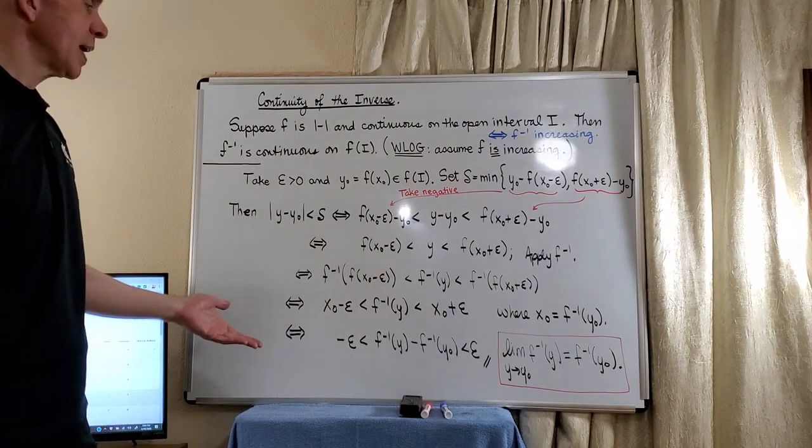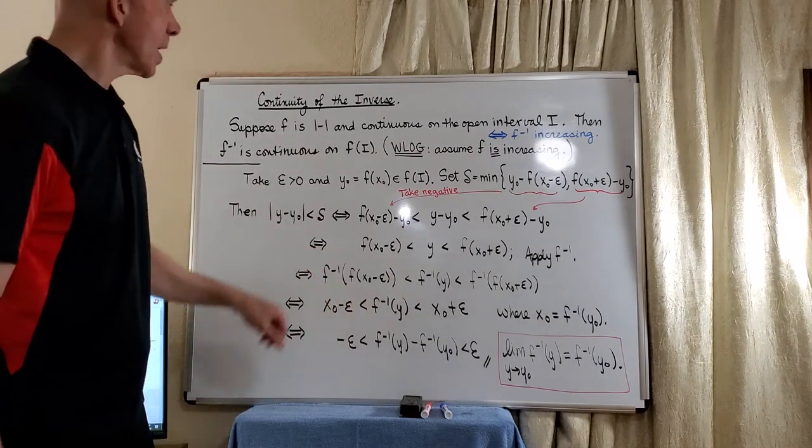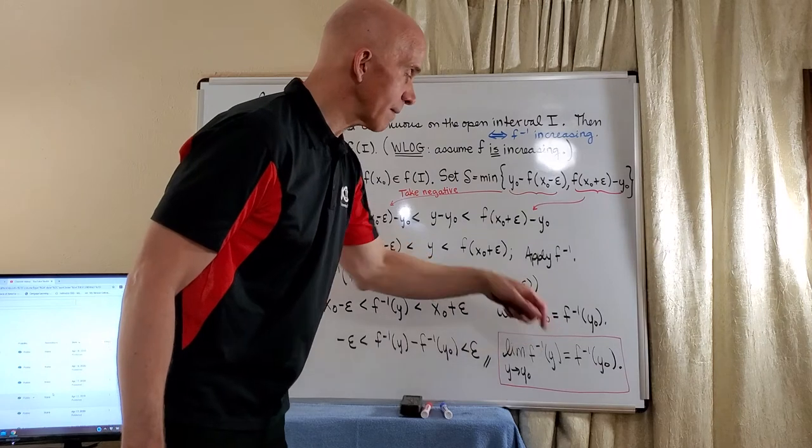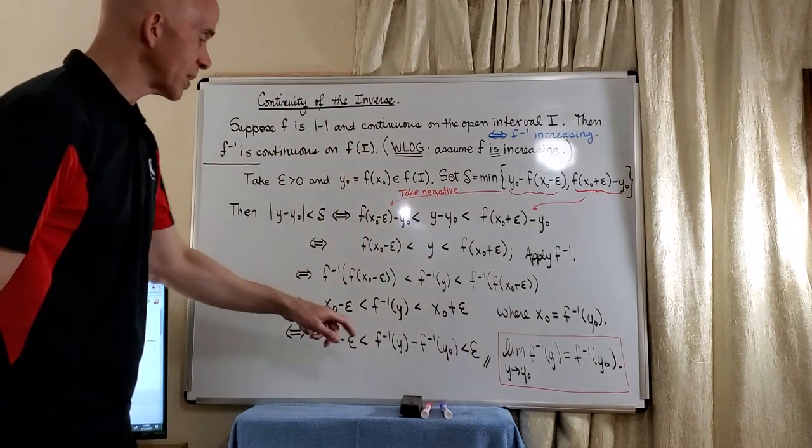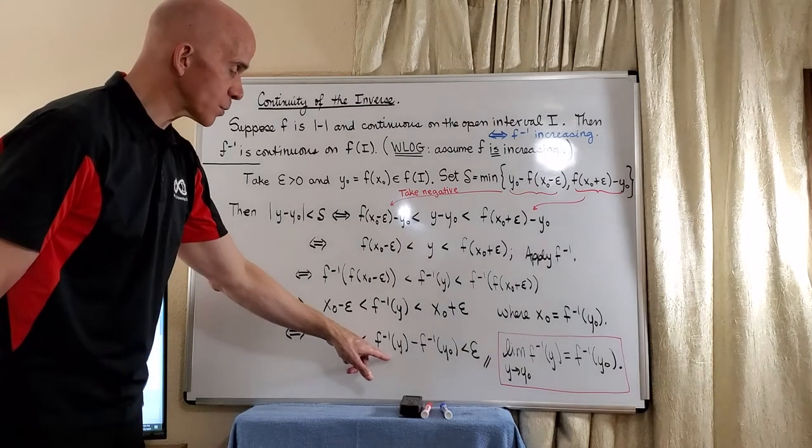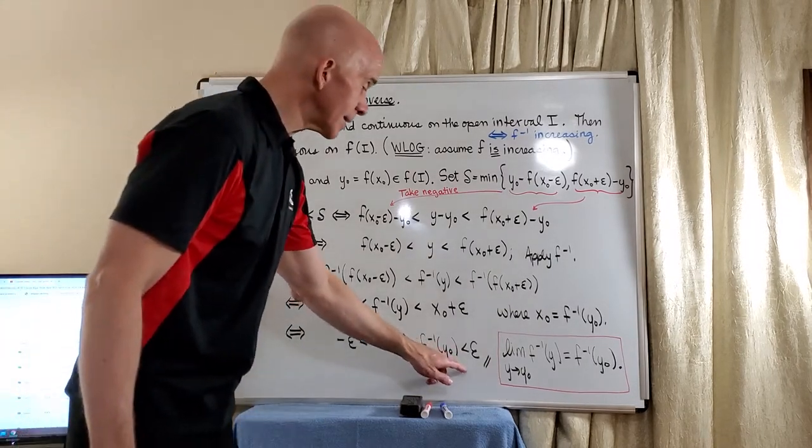So now, what we want to do is just subtract x-naught from each of these three terms. But by our definition here, we see that x-naught is simply f inverse of y-naught. So when we transpose, we get negative epsilon less than f inverse of y minus f inverse of y-naught less than epsilon.